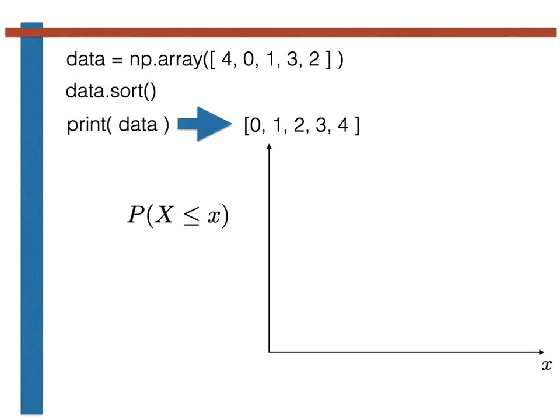Within the matplotlib plot command that I will use to make the graph of the cumulative probability distribution function, I will use the numpy array data, which is now sorted, for the x-coordinates of the points in my graph.